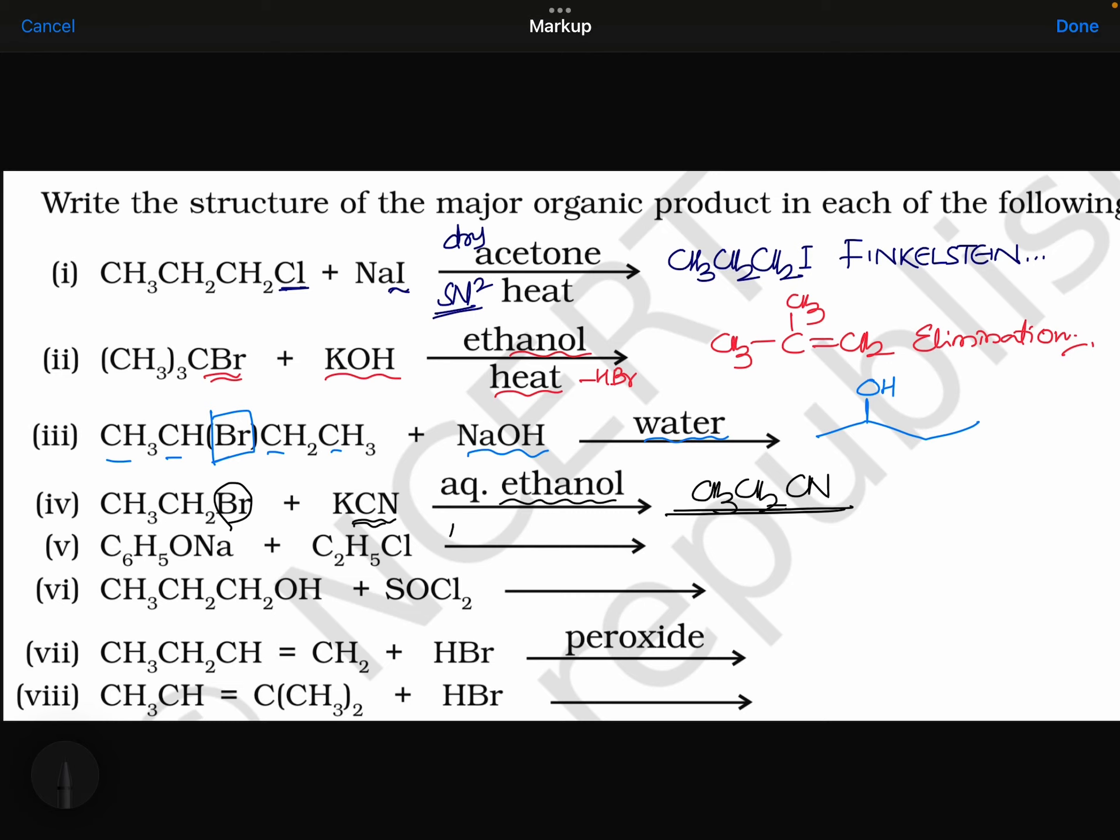And this reaction is Williamson synthesis. Williamson synthesis. In this sodium, chloride will be out. That means this O- is going to attack here. And chlorine is out. You will be getting here C6H5, O, C2H5. This is Williamson synthesis. Preparation of ethers. Ethoxybenzene is formed here. Ethoxybenzene.